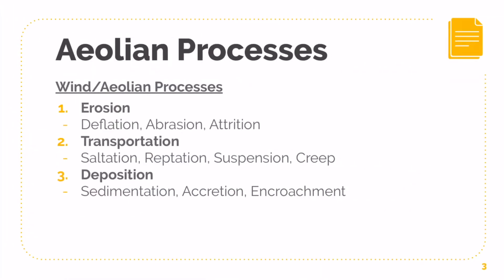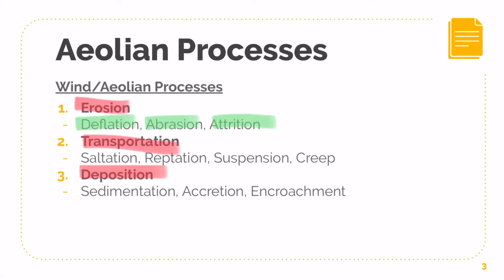Aeolian Processes: firstly you have got erosion, you've got transportation, you've got deposition. Under erosion, you have got deflation, abrasion, and attrition. Under transportation, you have saltation, raptation, suspension, and creep. And lastly, under deposition, you've got sedimentation, attrition, and encroachment.